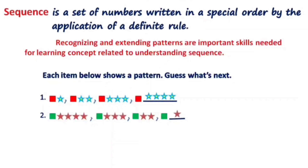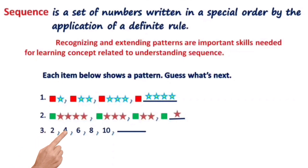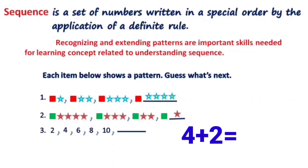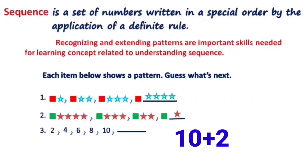In number 3, there are 5 given terms in a sequence: 2 is the first term, 4 is the second term, 6 is the third term, 8 is the fourth term, and 10 is the fifth term. The preceding term increases by 2: 2 plus 2 equals 4, which is the second term; 4 plus 2 equals 6 is the third term. So for the sixth term, 10 increased by 2 gives us 12.